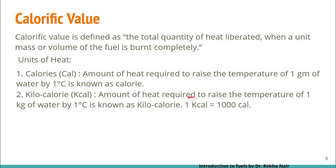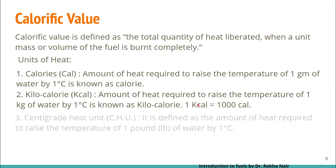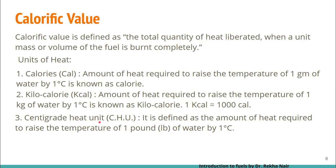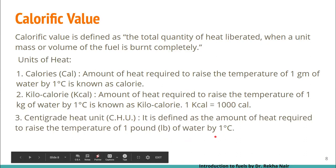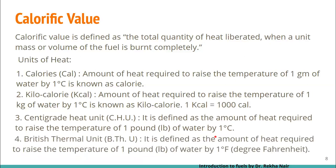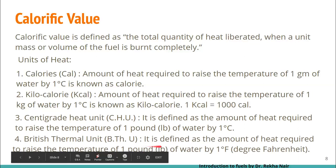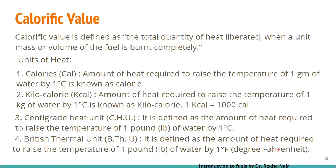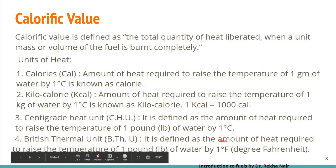So 1 kilocalorie is equal to 1000 calories. The next unit is centigrade heat unit (CHU), defined as the amount of heat required to raise the temperature of 1 pound of water by 1 degree centigrade. One more unit is BTU, that is British thermal unit, defined as the amount of heat required to raise the temperature of 1 pound of water by 1 degree Fahrenheit. These are the 4 units we will generally be using in calculations.